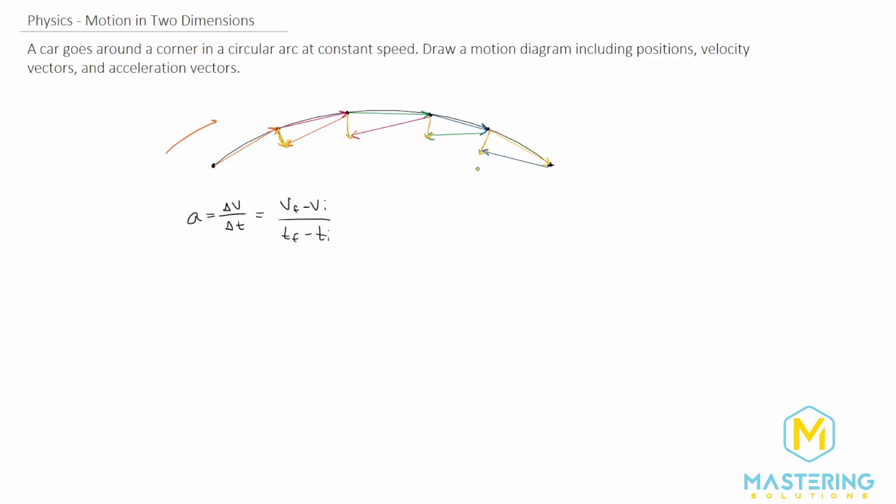The gold ones are representing the acceleration as we talked about. And so you can see when we're going in an arc, the acceleration is pointed towards the center. If you imagine this as a circle going all the way around. And we take the final velocity minus the initial, so the pink minus the orange, or the green minus the pink, etc. And that will give us a graphical representation of what the acceleration is.